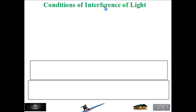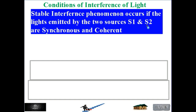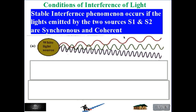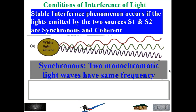How do we get interference of light? The first condition is that the waves should be of the same nature — sound with sound, light with light, water wave with water wave. To have a stable interference phenomenon, the light emitted by two sources S1 and S2 must be synchronous and coherent. If a red light intersects with a blue light, interference will never take place since they are not synchronous. Synchronous means the two monochromatic light waves have the same frequency.